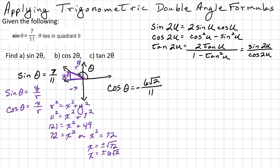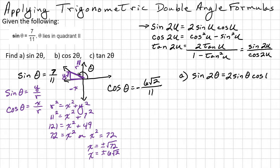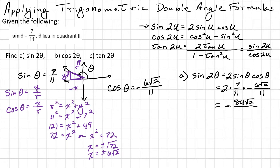Now let's find sine 2 theta using the double angle formula: sine 2 theta equals 2 times sine theta times cosine theta. Substituting, that is 2 times 7 over 11 times negative 6 square root of 2 over 11. Multiplying all of that out gives negative 84 square root of 2 over 121.